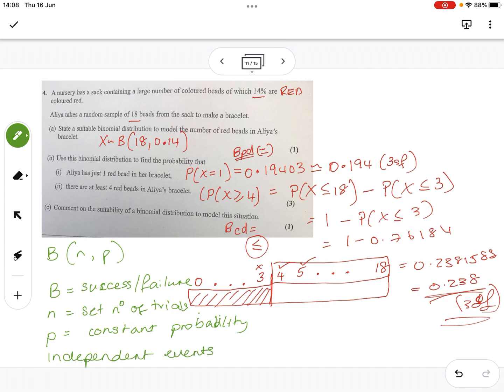Each one is independent. However, the constant probability is the issue. If you've got a small number of beads, every time you take out a bead, whether it's red or not red, you're going to affect the probability because it's going to change. That's the biggest issue.